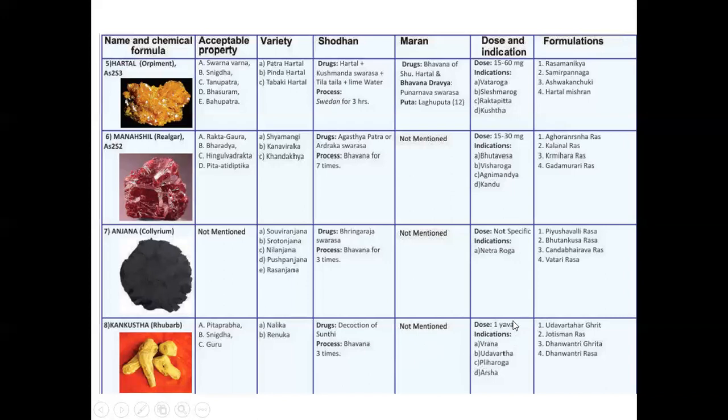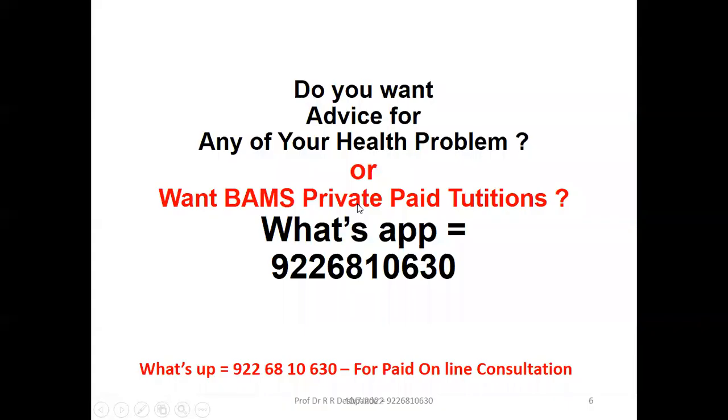Doses are one Yav, only very small. Indications is Vrana, that is the septic wounds. Then Udavart, like Peristaltic or Vatarog. Liharog, that is Plenomegaly. Arsha is like Piles or the Hemorrhoids. And then products from Kankushta are Udavart Har Ghrita, then also Jyotishmana Rasa, then Dhanvantri Ghrita and Dhanvantri Rasa. So these are all about what we talked about Uparas today.